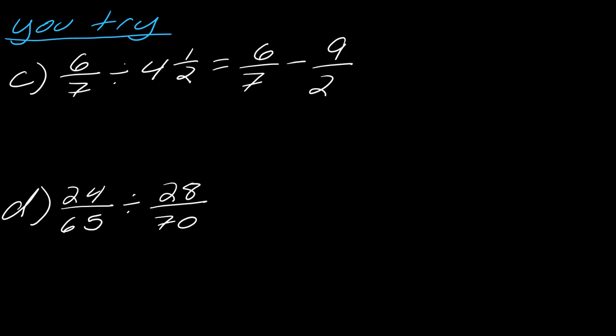And, oops, this should still be division. My bad. Like this. Okay, so, this is now 6 sevenths divided by this 4 and a half becomes 9 over 2.